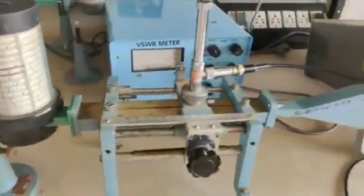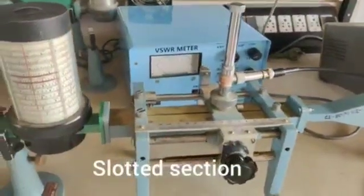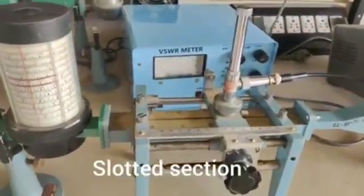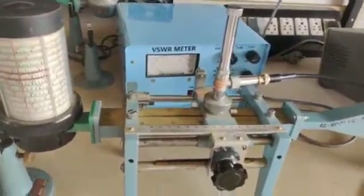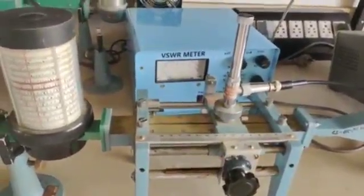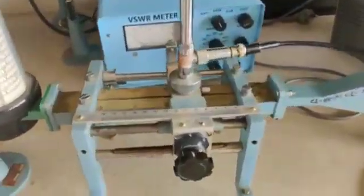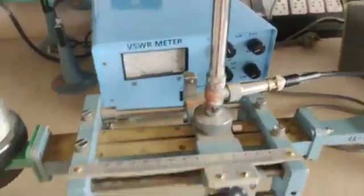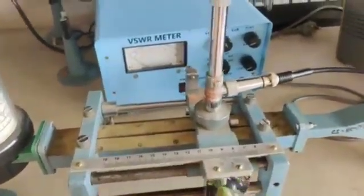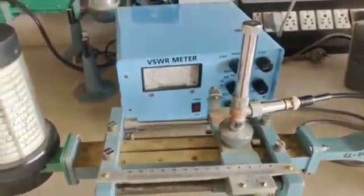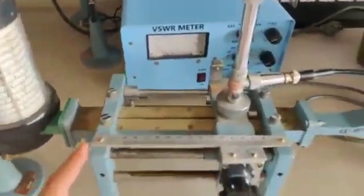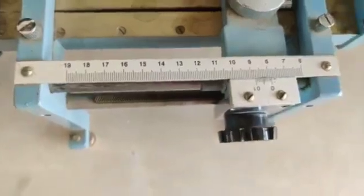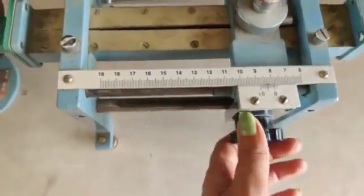Next one is slotted section. Here it should cover desired frequency and should be equipped with accurate scale indicator. This is the scale. You have to rotate from either from the rightmost, or you can start the rotation from the leftmost. This is the scale measurement.